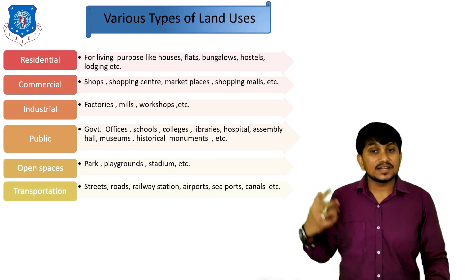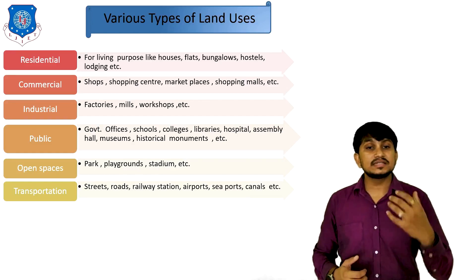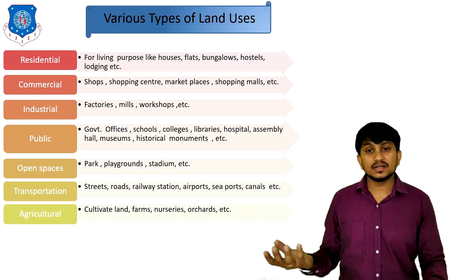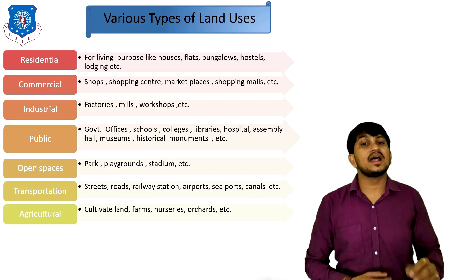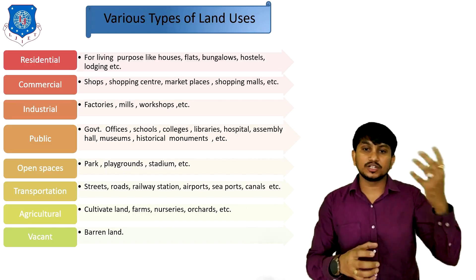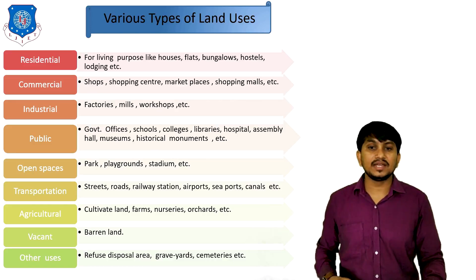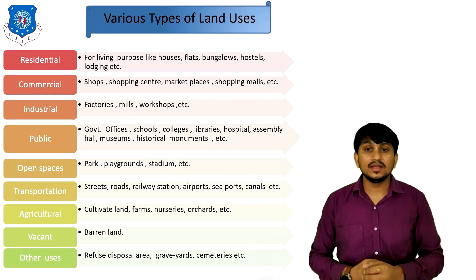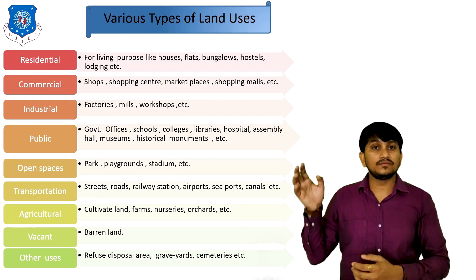Next is open spaces, like parks, grounds, stadiums, swimming pools, etc. Next is transportation — roads, streets, rail stations, airports, seaports, canals, BRTs, etc. Next is agriculture — cultivated land, farms, nurseries, orchards, etc. Next is vacant land — a type of barren land reserved for future use. And the last is other uses — such as waste disposal areas, graveyards, or cemeteries.